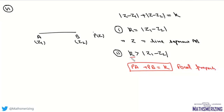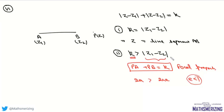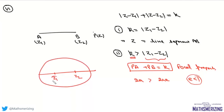In the ellipse case, k represents 2a and |z₁ - z₂| is the distance between the two foci. We know that for an ellipse the eccentricity e is always less than 1. So if k is greater than |z₁ - z₂|, then z lies on an ellipse whose foci are at z₁ and z₂ and whose major axis length equals k. If k is less than |z₁ - z₂|, it doesn't represent any locus.